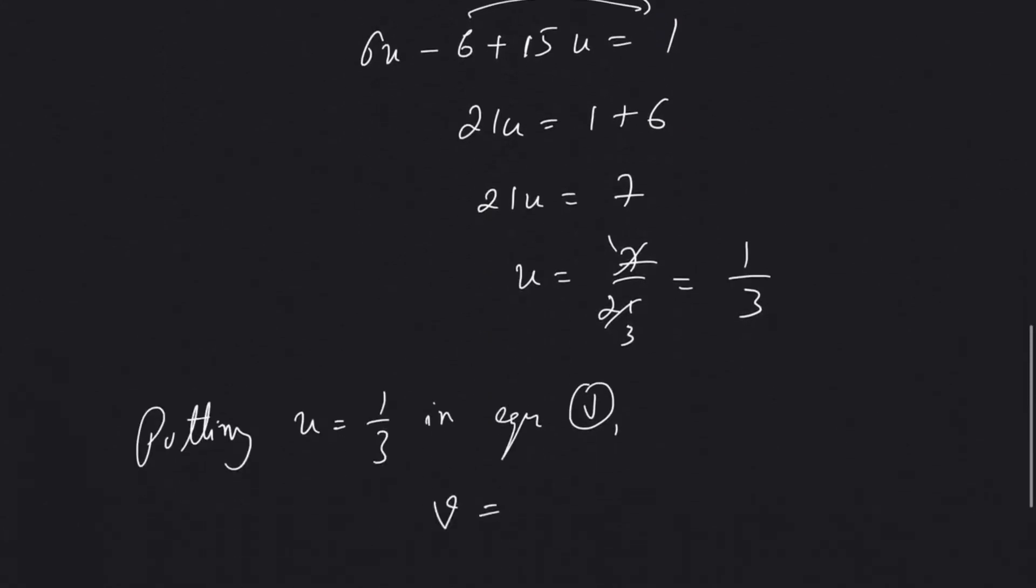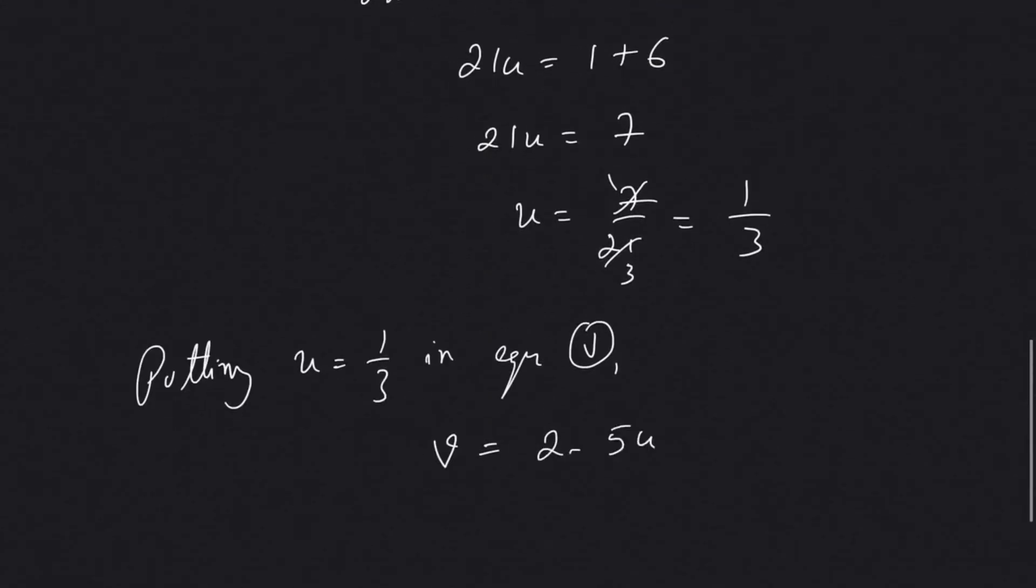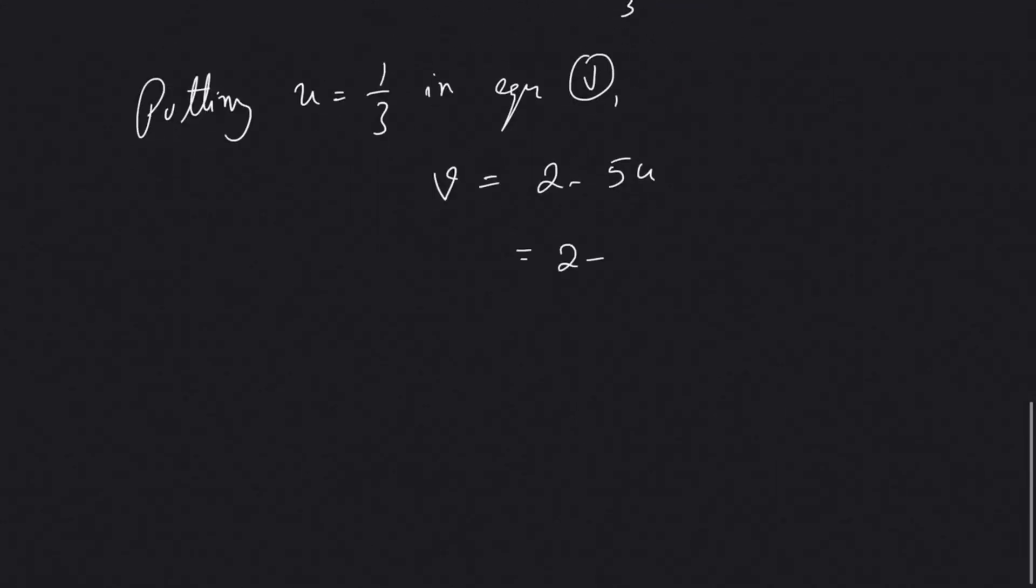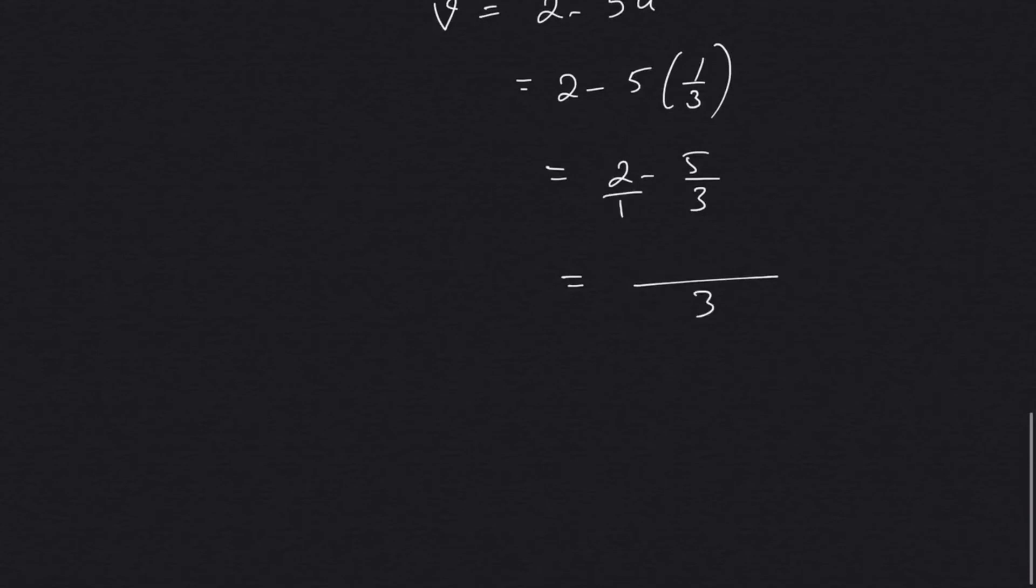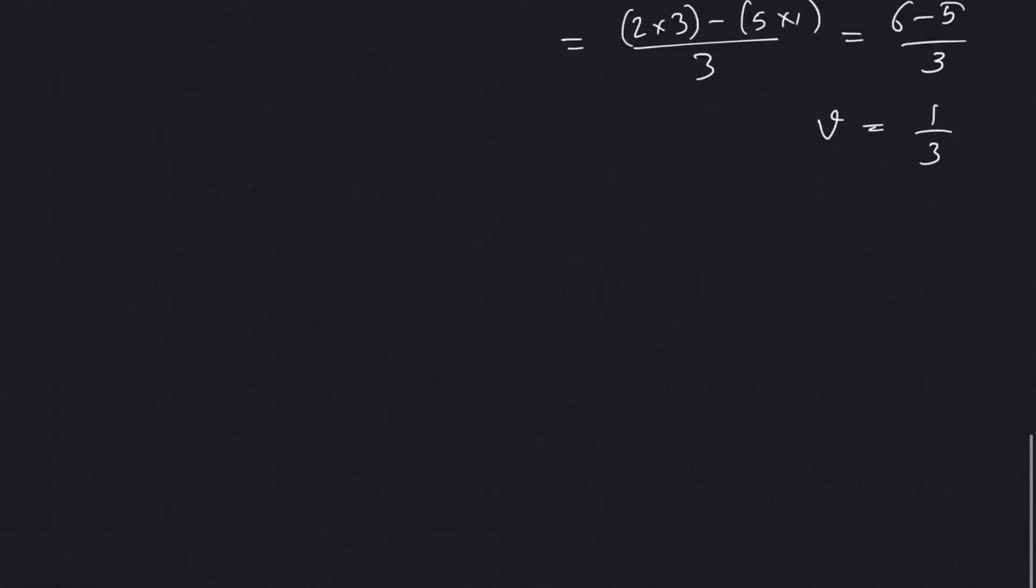v will be equal to 2 minus 5u, which is 2 minus 5 into 1 by 3, which is 2 minus 5 by 3. That's 2 into 3 is 6 minus 5 into 1 is 3, so 6 minus 5 by 3, that is 1 by 3.